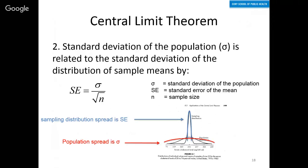The second part of the central limit theorem is that the standard deviation of the population and of the sampling distribution are related by this equation. I call the standard deviation of the sampling distribution the standard error. It's still a standard deviation, but it has a special name — the standard error — and we only use that for describing a sampling distribution.